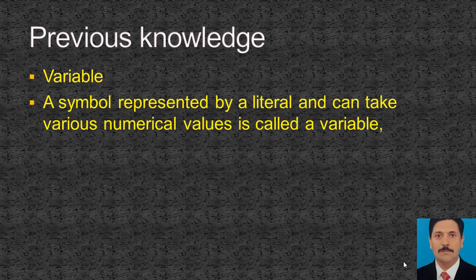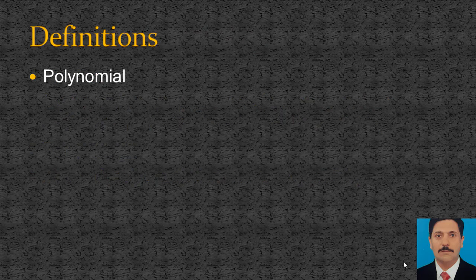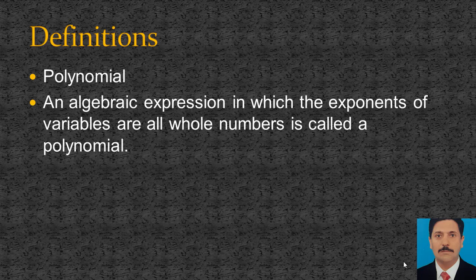Variable: a symbol represented by a literal that can take various numerical values is called a variable. For example, in x plus 1, x is a variable and 1 is a constant. Now we learn the definition of polynomial: an algebraic expression in which the exponents of variables are all whole numbers is called a polynomial. For example, x squared plus 2.